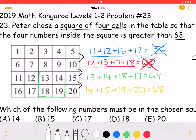Now, for this one, we have 13 plus 14 plus 18 plus 19, which is 64. 64 is greater than 63, so that square works.